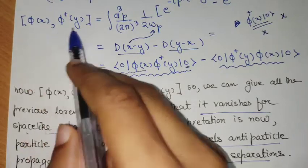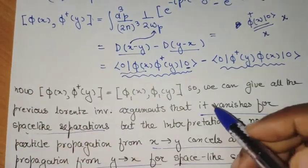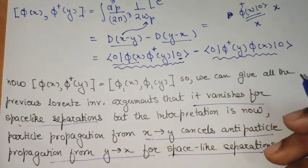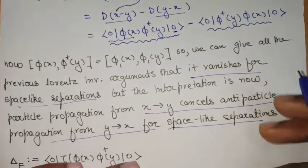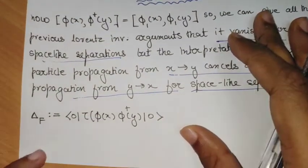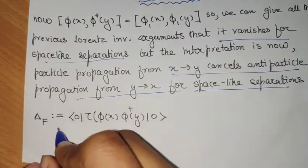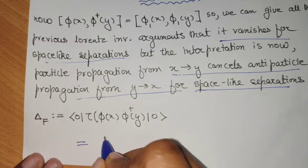This, in turn, ensures that this operator is zero for space-like separations and the fact that our theory is Lorentz invariant. And the Feynman propagator now can easily be defined in this fashion,